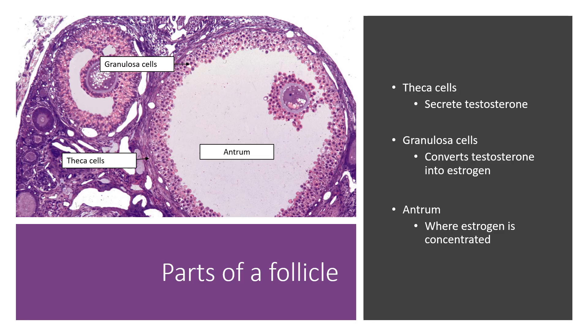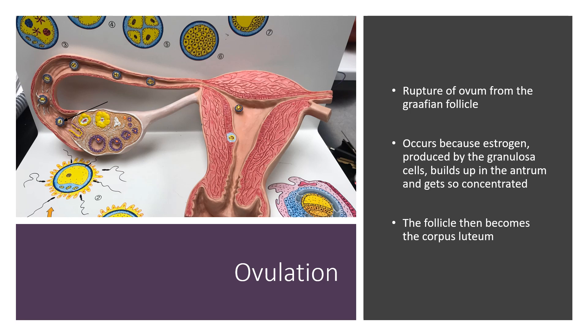In order to understand how ovulation works, you need to know the parts of a follicle. You have the theca cells, which are the outer layer of cells of the follicle, and they secrete testosterone. You have the granulosa cells, which are the innermost layer of the follicle, and they convert that testosterone into estrogen. That estrogen is then pumped into a fluid-filled space called the antrum. When the estrogen gets so concentrated within the antrum, it causes the oocyte to erupt from the Graafian follicle and out of the ovary. The fimbriae on the fallopian tube then pull it up into the fallopian tube.